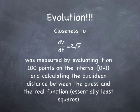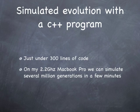So how do we measure the closeness? Basically what I did was I took on the interval 0 to 1 milliseconds, which is the interval that we want to approximate this for. Basically, I just evaluated both of the functions, the target function and the guest function, and then I did a least squares distance between the two of them. And if the least squares distance decreased, then I accepted the mutation. So I simulate this with a C++ program. It's a very simple program. It's just under 300 lines of code. And on my 2.2 gigahertz MacBook Pro, I can simulate several million generations in just a few minutes.